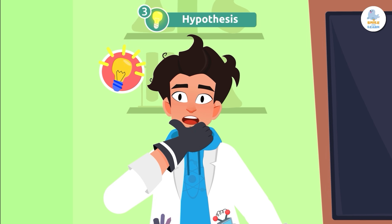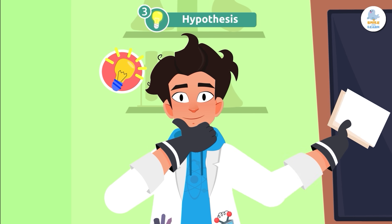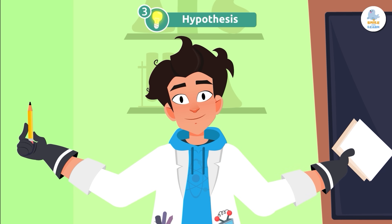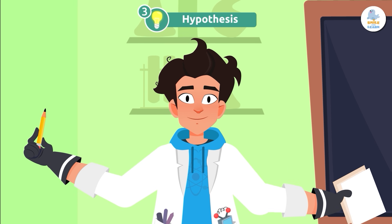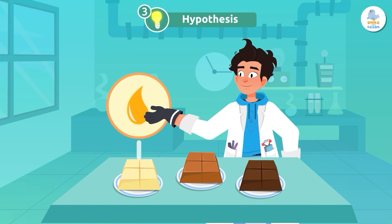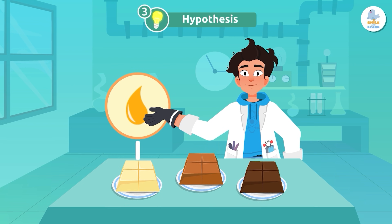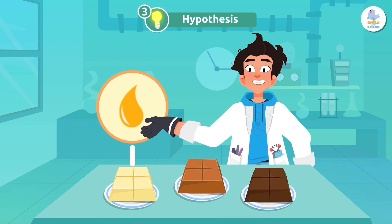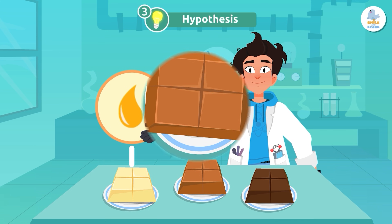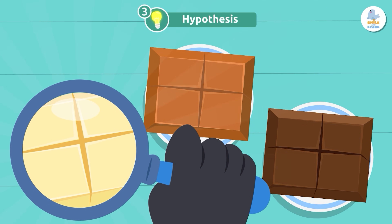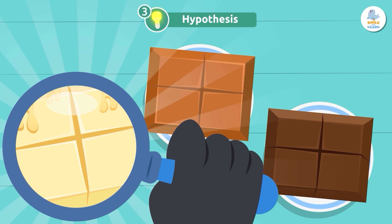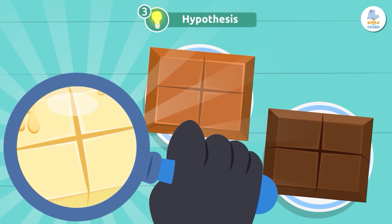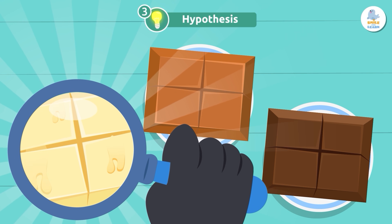Now it's time to make a hypothesis. A hypothesis is an educated guess about what we think will happen, based on the information we have. For example, if our research shows that white chocolate has the most fat and fat melts easily, we can say that white chocolate melts faster because it has more fat. This is our hypothesis.